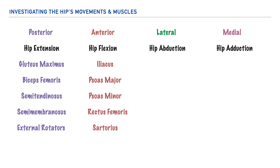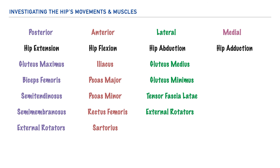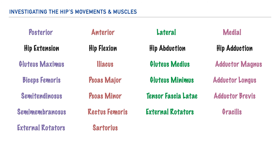Laterally we have the gluteus medius, gluteus minimus, the tensor fasciae latae, and the six deep external rotators. Medially we have the adductor magnus, adductor longus, adductor brevis, and the gracilis.